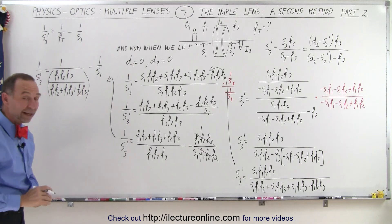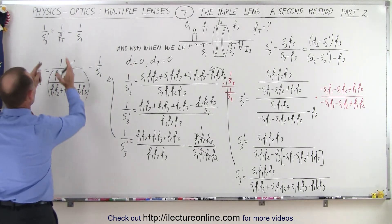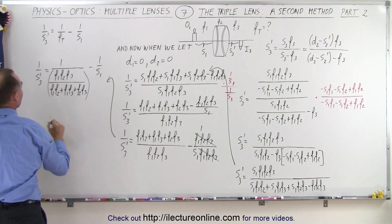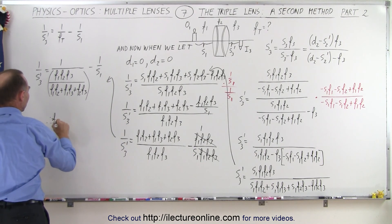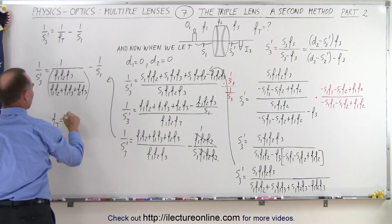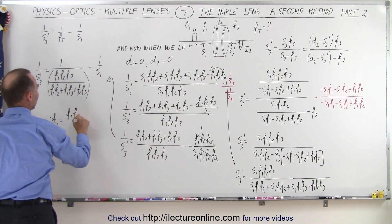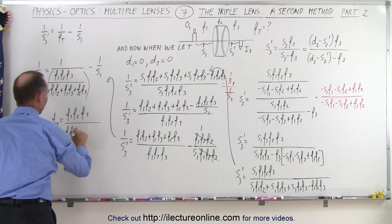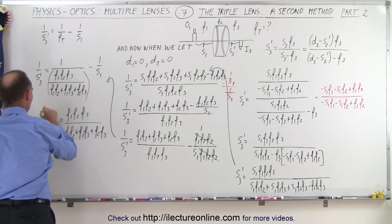And finally we realize now that f total must equal what's inside here. So therefore we can say that f total, which is basically the equivalent focal length of the three lenses combined, is going to be equal to the product f1 f2 f3 divided by f1 times f2 plus f1 times f3 plus f2 times f3.